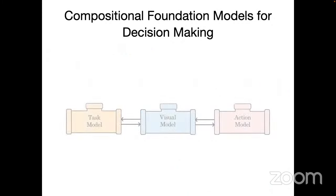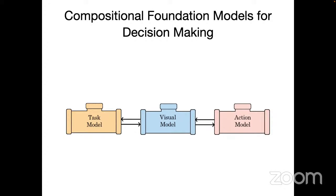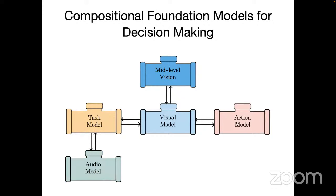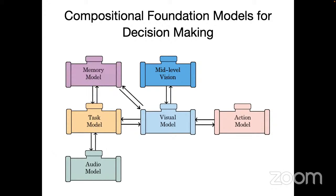The worldview we're pushing is: for decision-making, we have a task model, a visual model, and an action model. We're not saying this is exactly what you need, but rather imagining a world where instead of a single monolithic model, we leverage already-available foundation models. You could use mid-level vision models like SAM for task grounding, audio models for voice-specified tasks, or memory models like a semantic 3D map for partial observability — all these components interacting for decision-making.